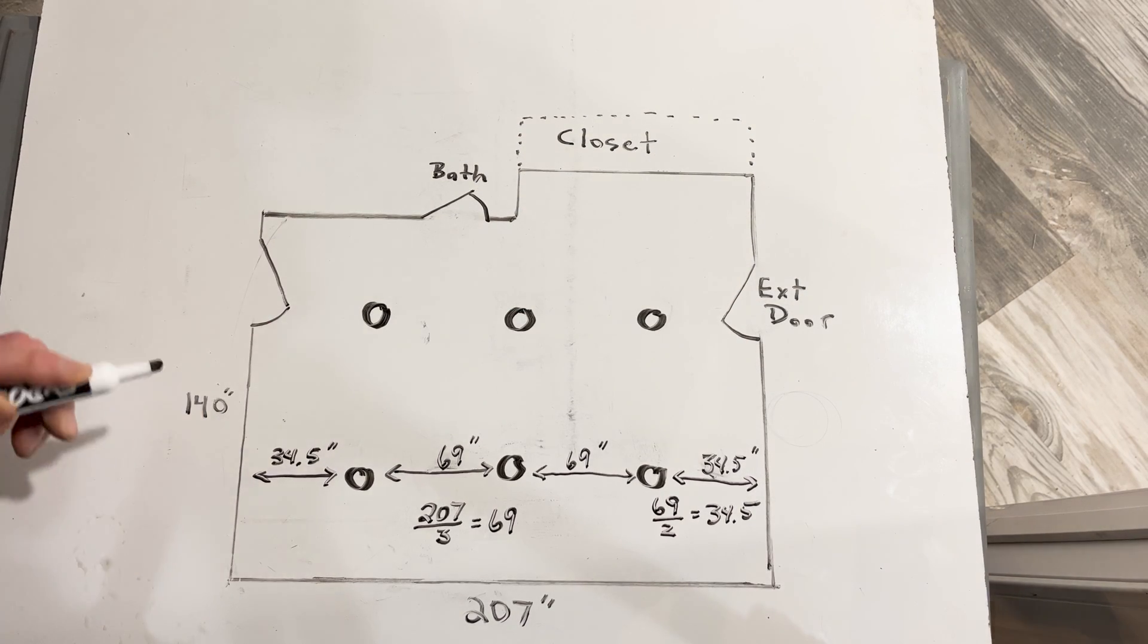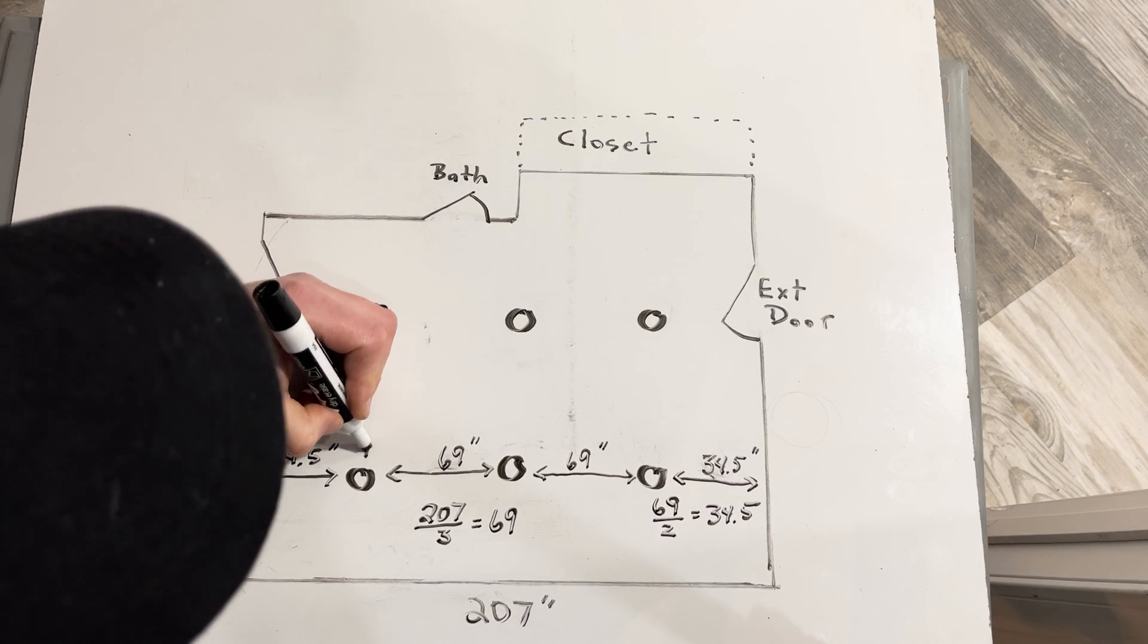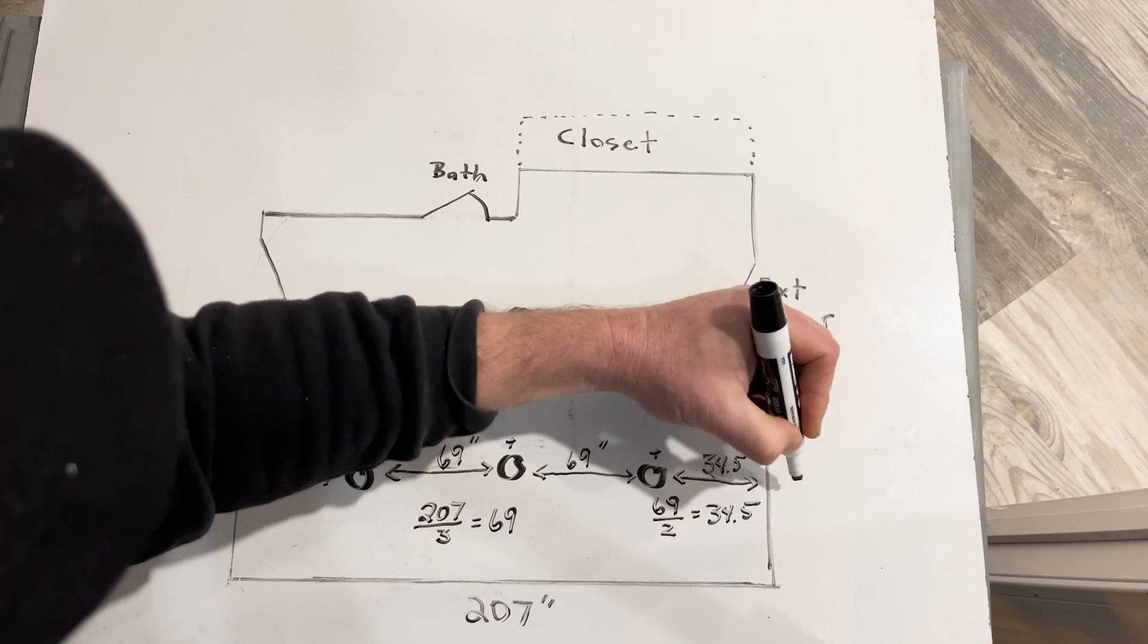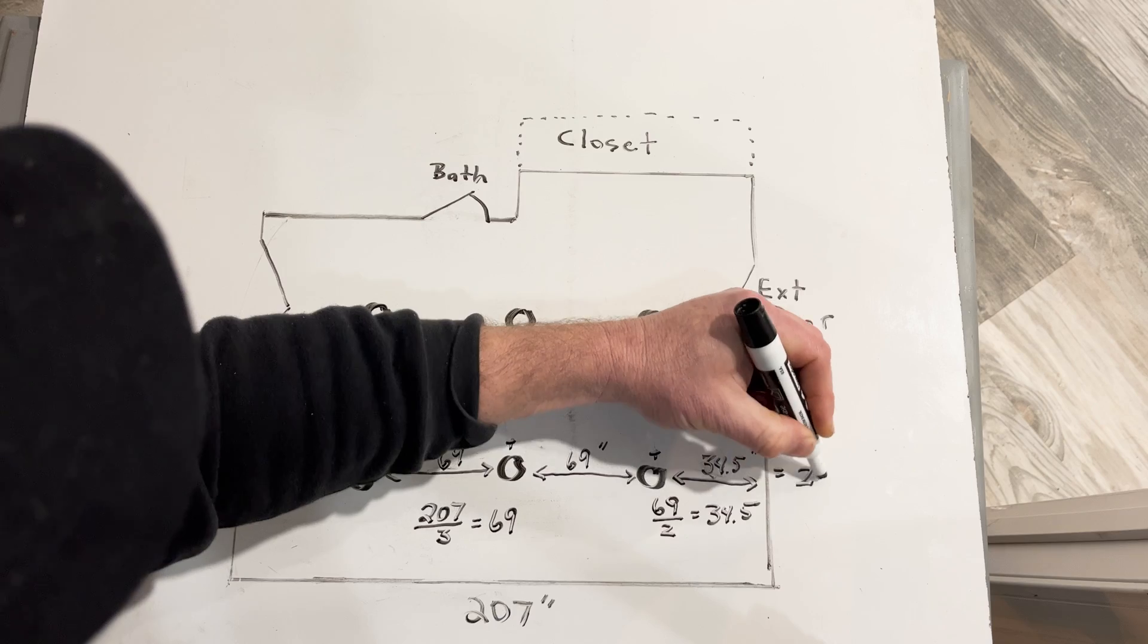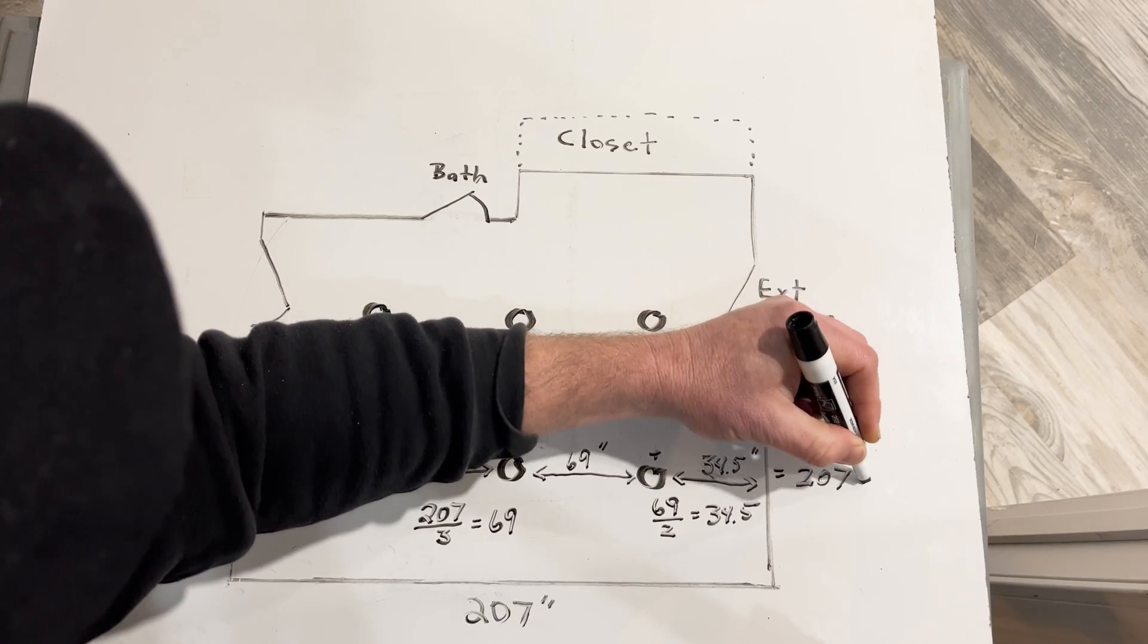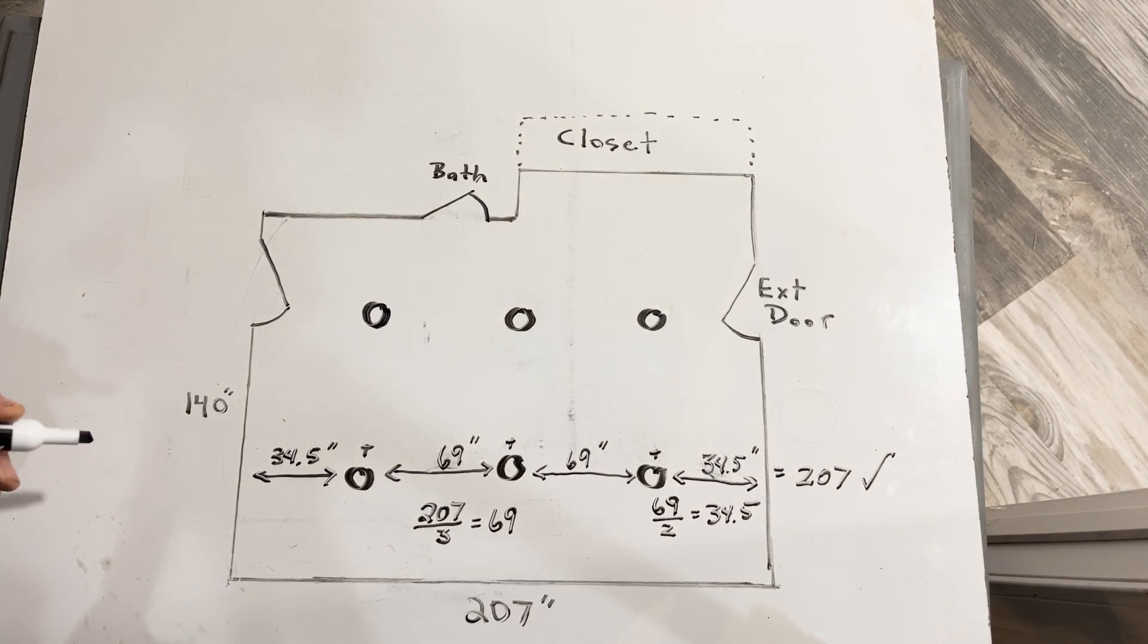You can double check your math by adding these numbers up and making sure their sum is equal to the total wall length. 34 and a half plus 69 plus 69 plus 34 and a half is 207 inches. The math is good.